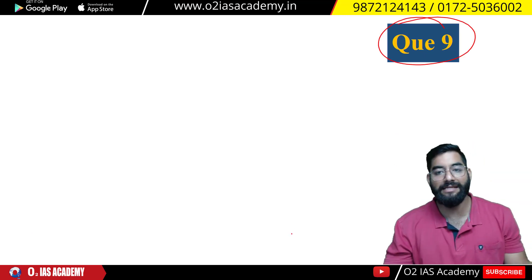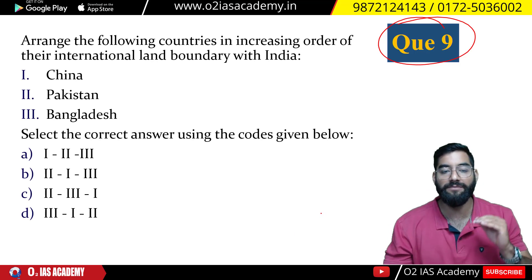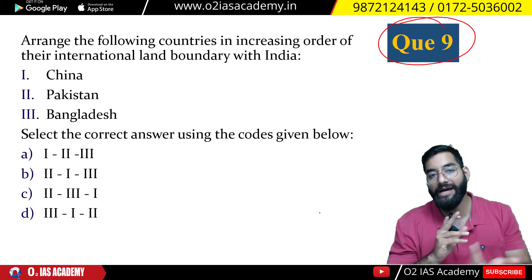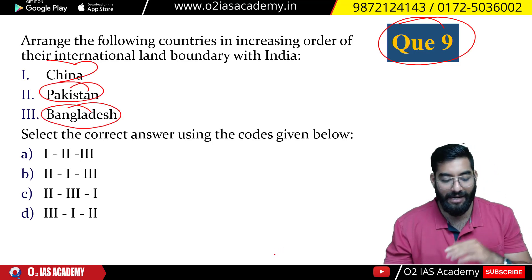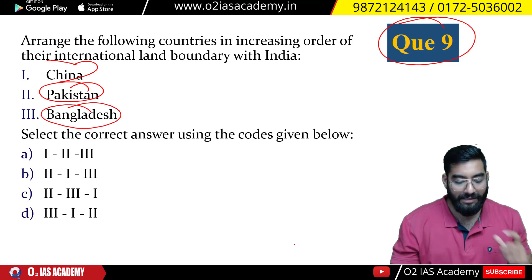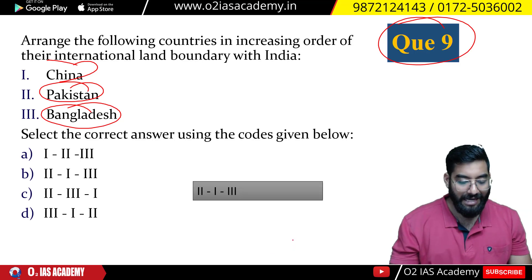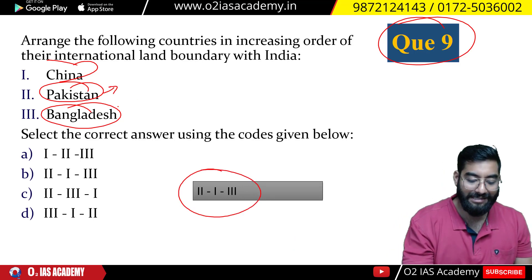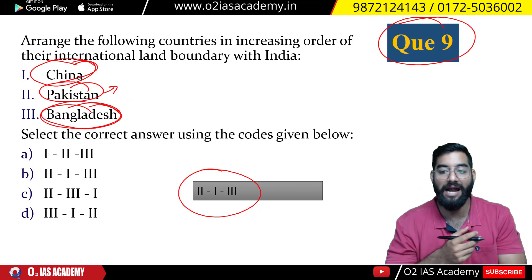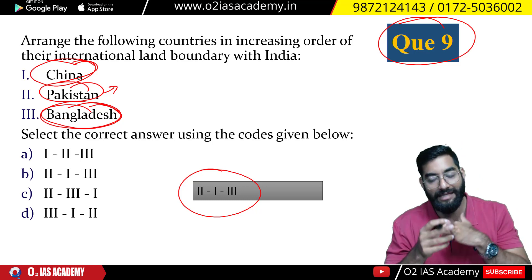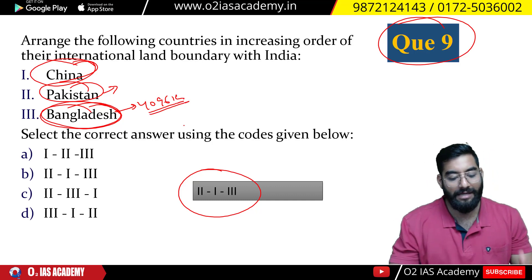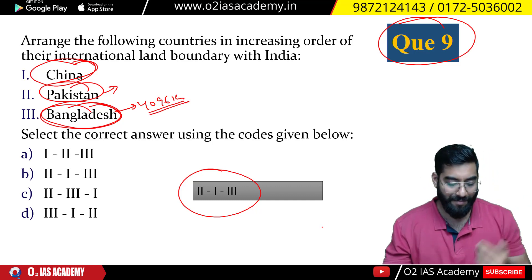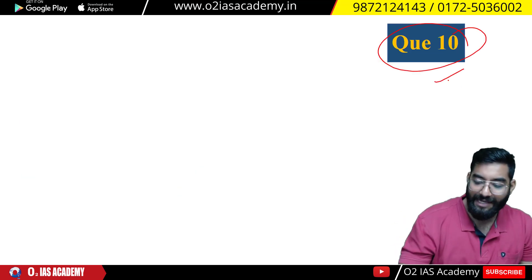Question number 9: Arrange the following countries in increasing order of boundary shared with India — China, Pakistan, and Bangladesh. The answer is: first Pakistan (smallest boundary), then China, and then Bangladesh. Bangladesh is our largest land neighbor — it shares around 4,000-something kilometers of boundary. China is slightly less at around 3,900 km, and Pakistan is less than that.